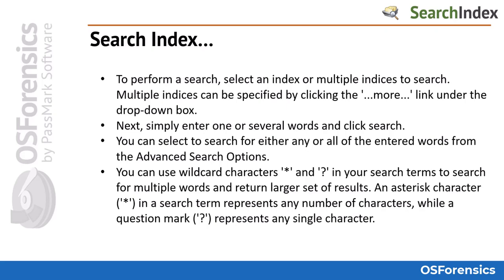You can use wildcard characters — the asterisk or the question mark — in your search terms to search for multiple words and return larger sets of results. An asterisk character, for example, in a search term represents any number of characters, while the question mark represents any single character.